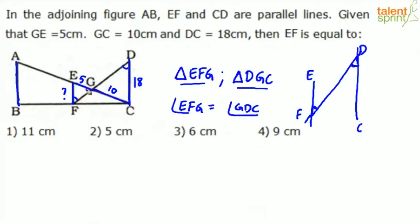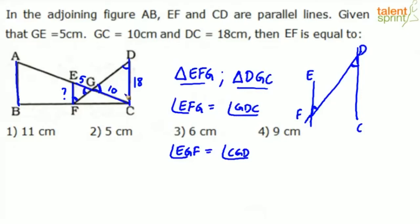Moreover, angle EGF and angle DGC are also equal because they are vertically opposite angles — two lines intersecting each other form equal vertically opposite angles. Since two angles in both triangles are equal, the third angle must also be equal, and therefore the two triangles are similar by the AA criterion.